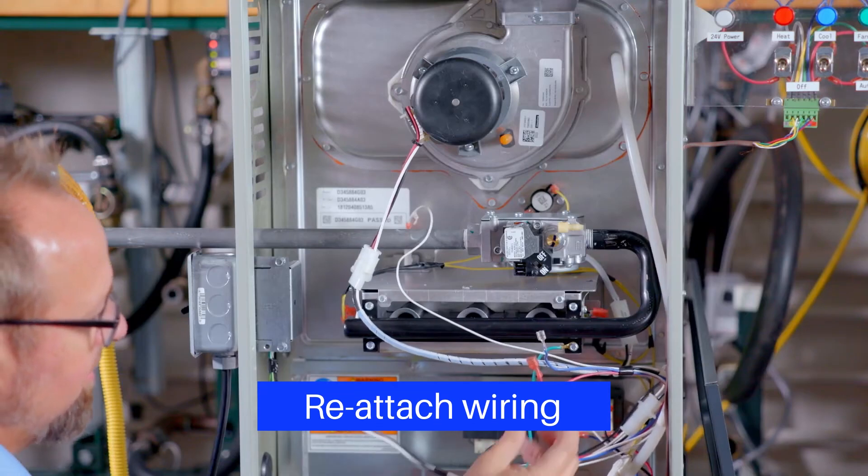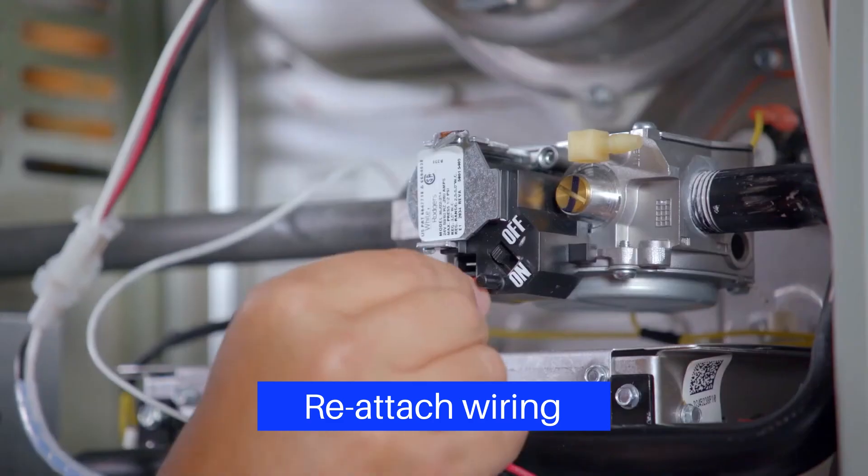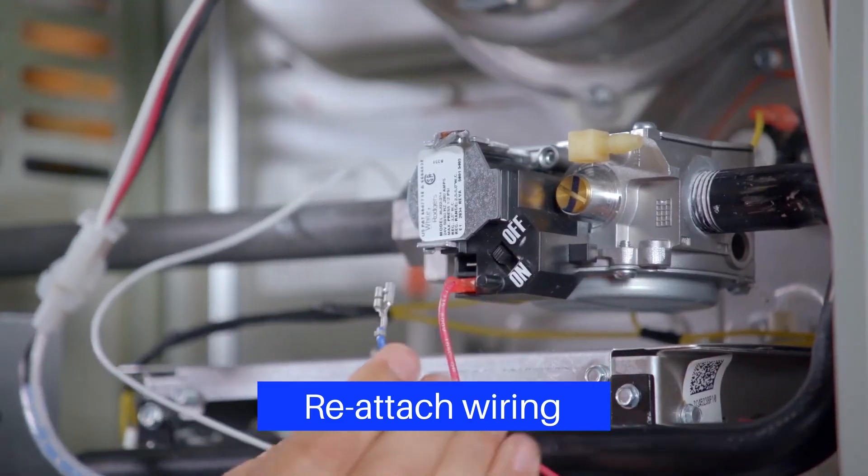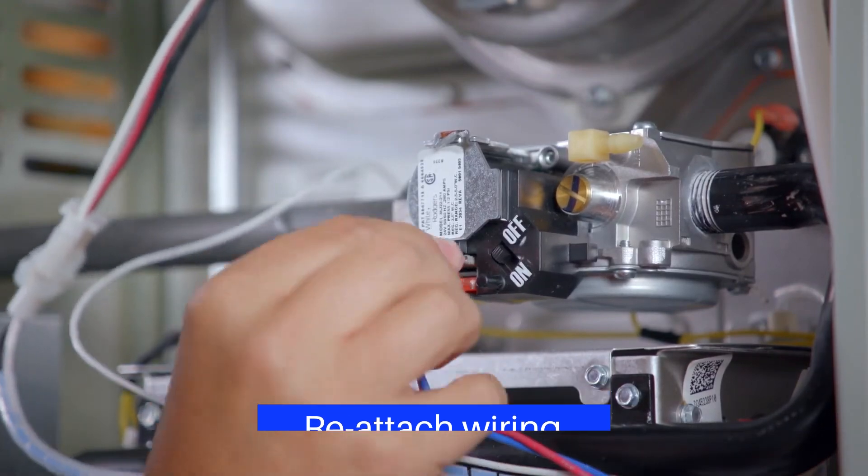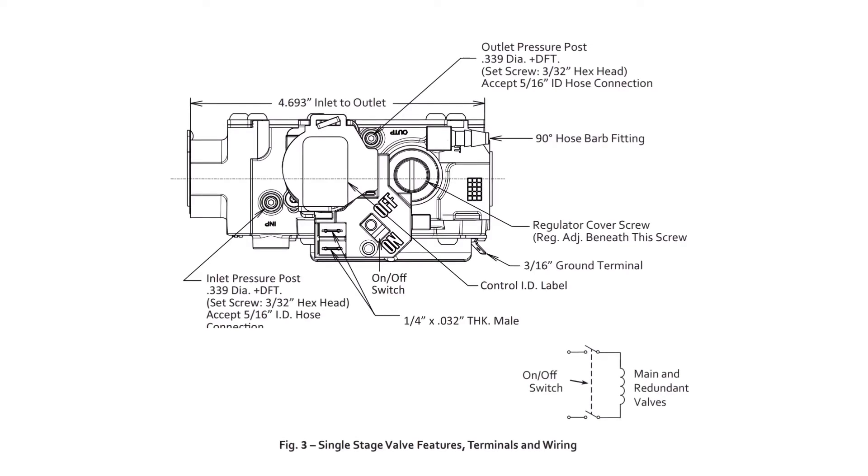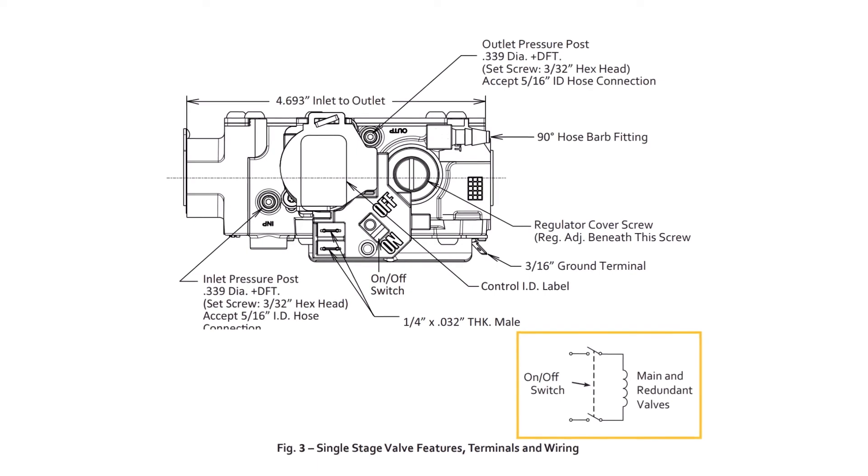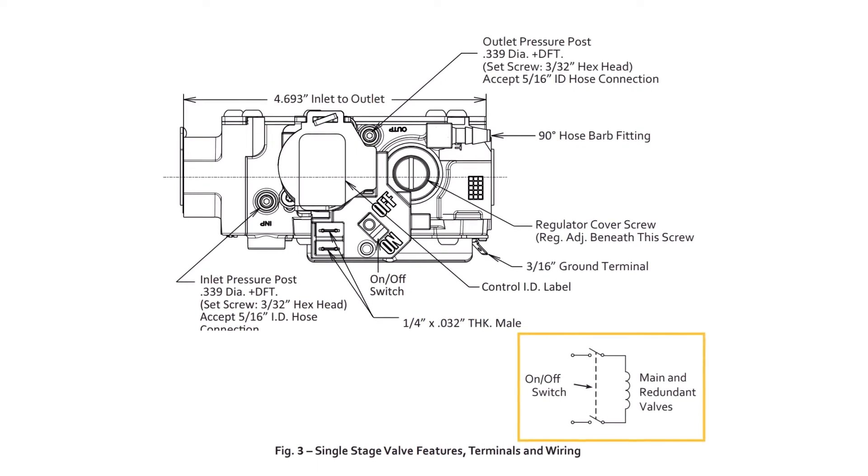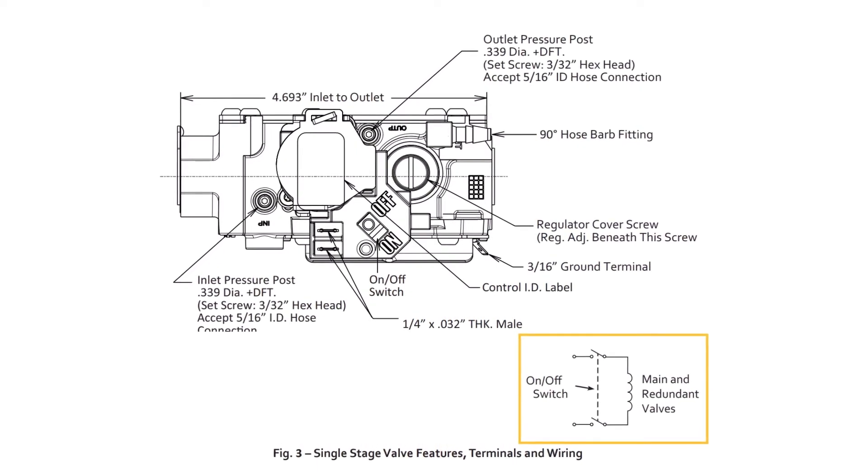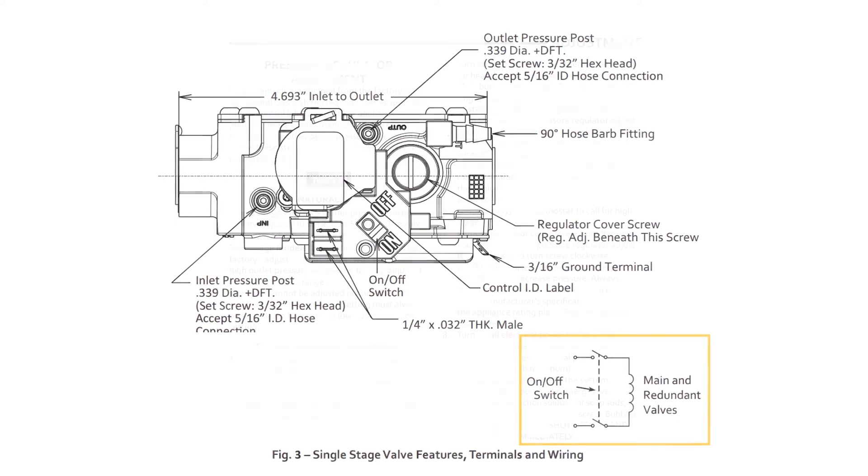Reconnect the two 24-volt wires to the 36J22214 to the two quarter-inch spades on the new valve. If needed, verify by using the equipment manufacturer's wiring diagram or refer to the installation instructions for an illustration showing terminal identification.